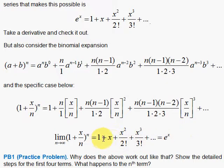And you get this nice result, which shows that this definition, where you take the limit as n goes to infinity of this quantity, 1 plus x over n to the nth power, gives you the same power series as e to the x. So it is also e to the x.